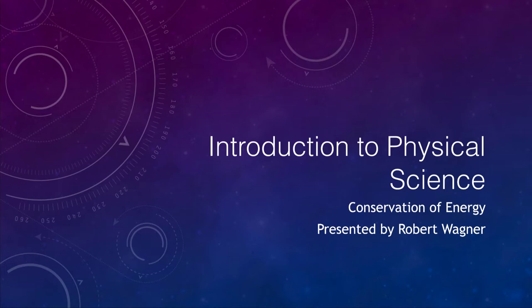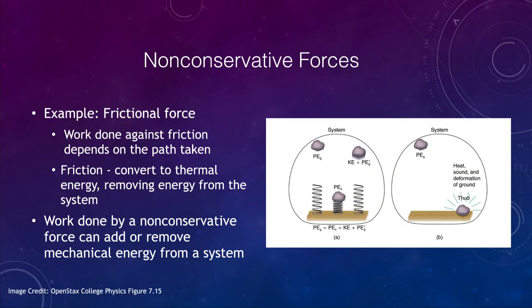Let's get started and look at examples. Last time we looked at conservative forces — those were forces where the change in energy did not depend on the path that you took. We looked at that with one of the cars where it could take a simple track or a looping track, but if it ended up at the same spot and all forces were conservative, then it would be the same result.